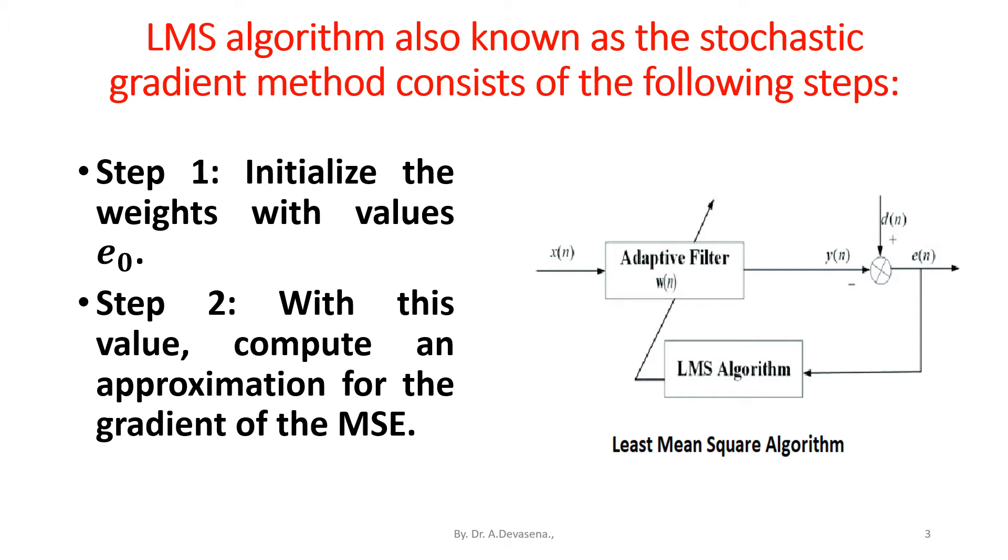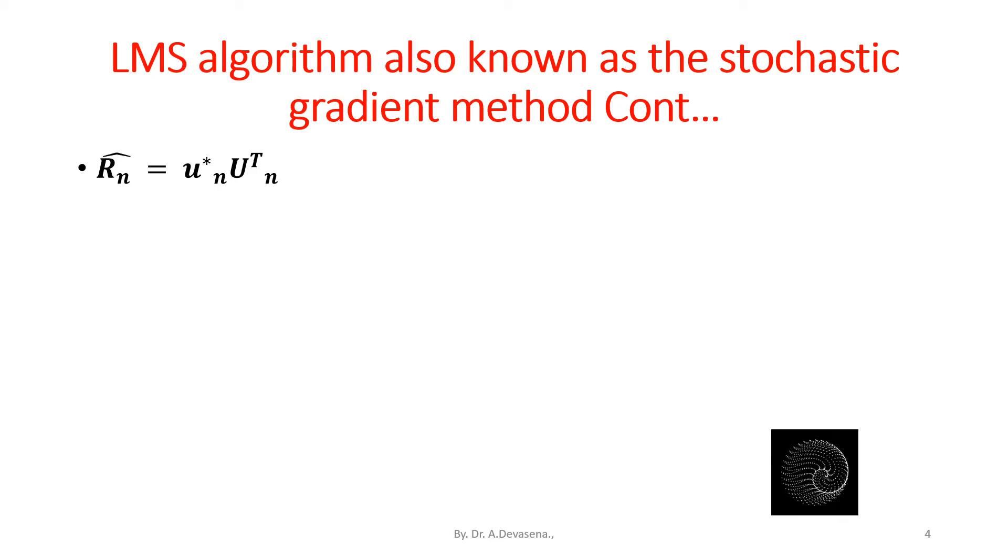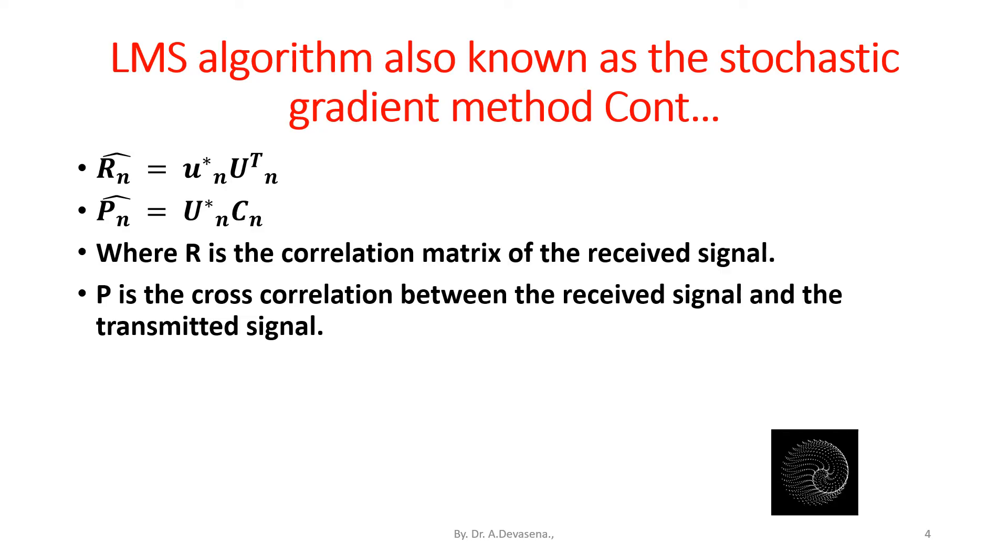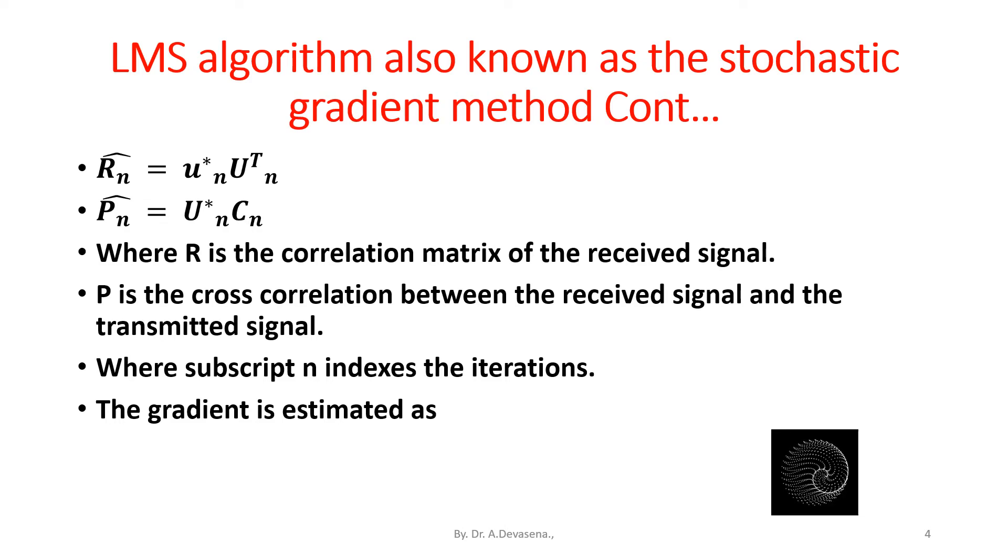R̂_n = u*_n U^T_n, P̂_n = U*_n c_n, where R is the correlation matrix of the received signal, P is the cross correlation between the received signal and the transmitted signal, where subscript n indexes the iterations.